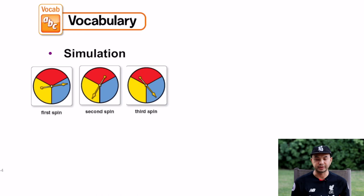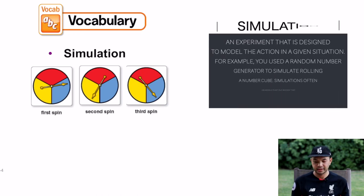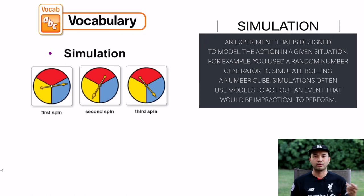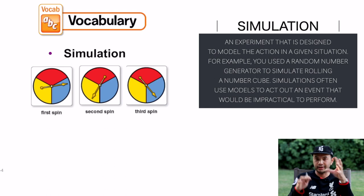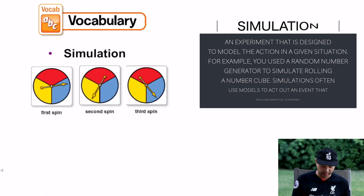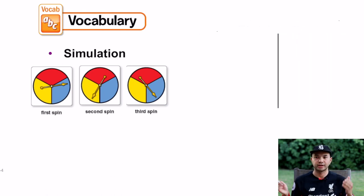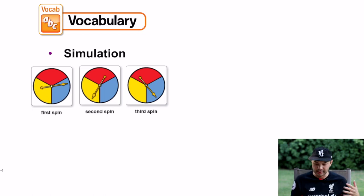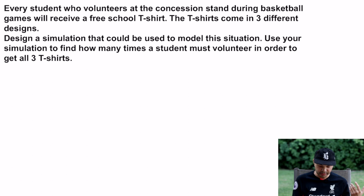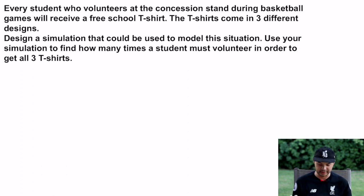Next we're going to talk about simulation. Simulation is a way of collecting probability data using actual objects like coins or spinners. Here's the example: first spin, second spin, third spin — those are actual spinners. You're going to use those spinners to represent actual objects that you can't spin around.